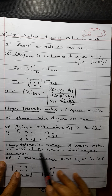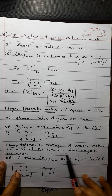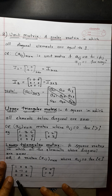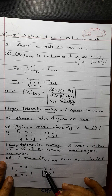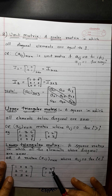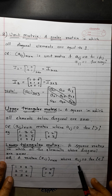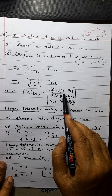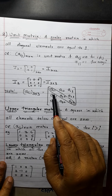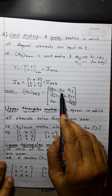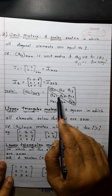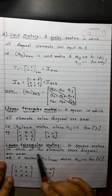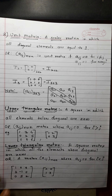A lower triangular matrix is a square matrix in which all elements above the diagonal are 0. Formally, aᵢⱼ = 0 if i < j. Above the diagonal, i is less than j. The first index is row and second is column. When i < j, the element must be 0 — then it is a lower triangular matrix.